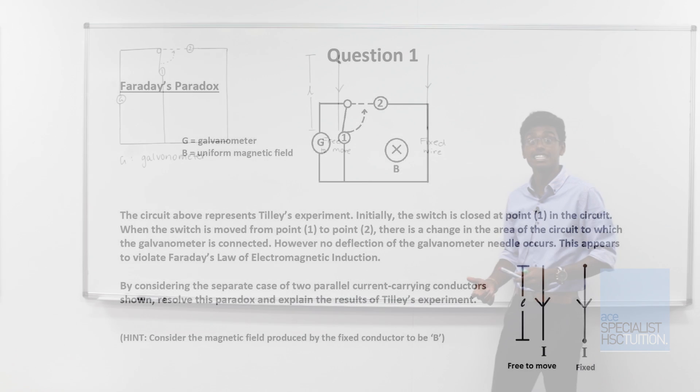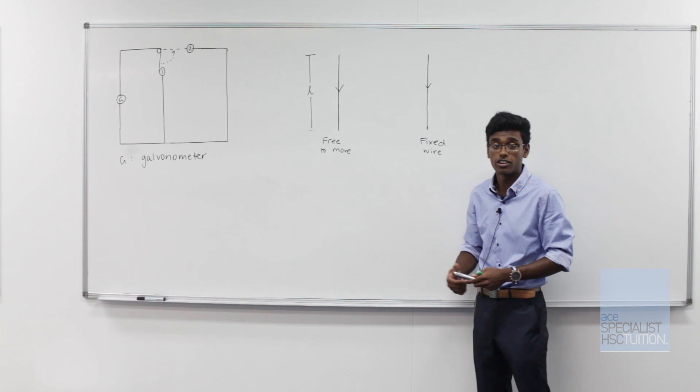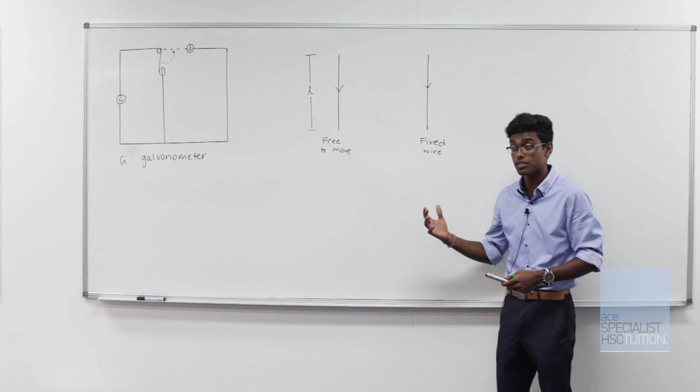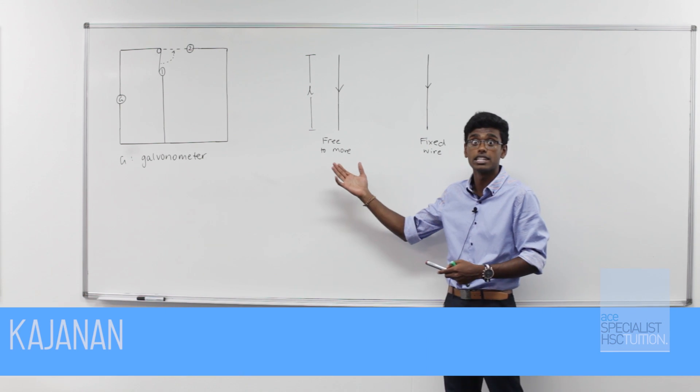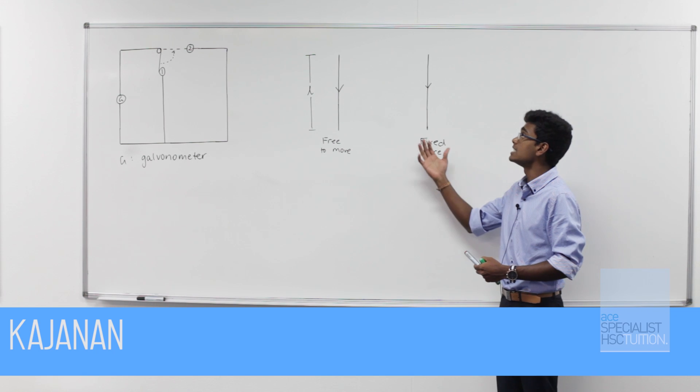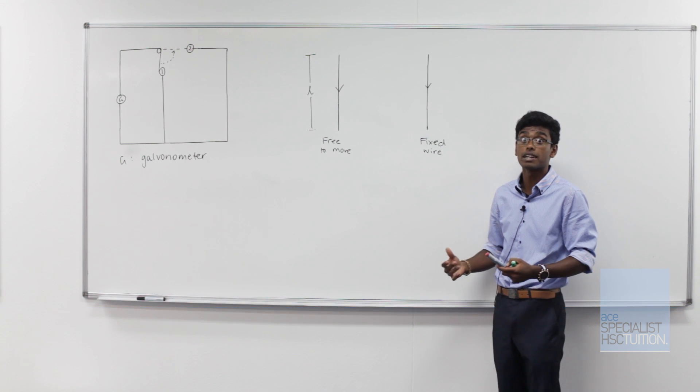So our question wants us to consider two parallel current-carrying conductors. Now you can see on the board, one of these is fixed and the other is free to move. Let's consider the magnetic field produced by the fixed wire.